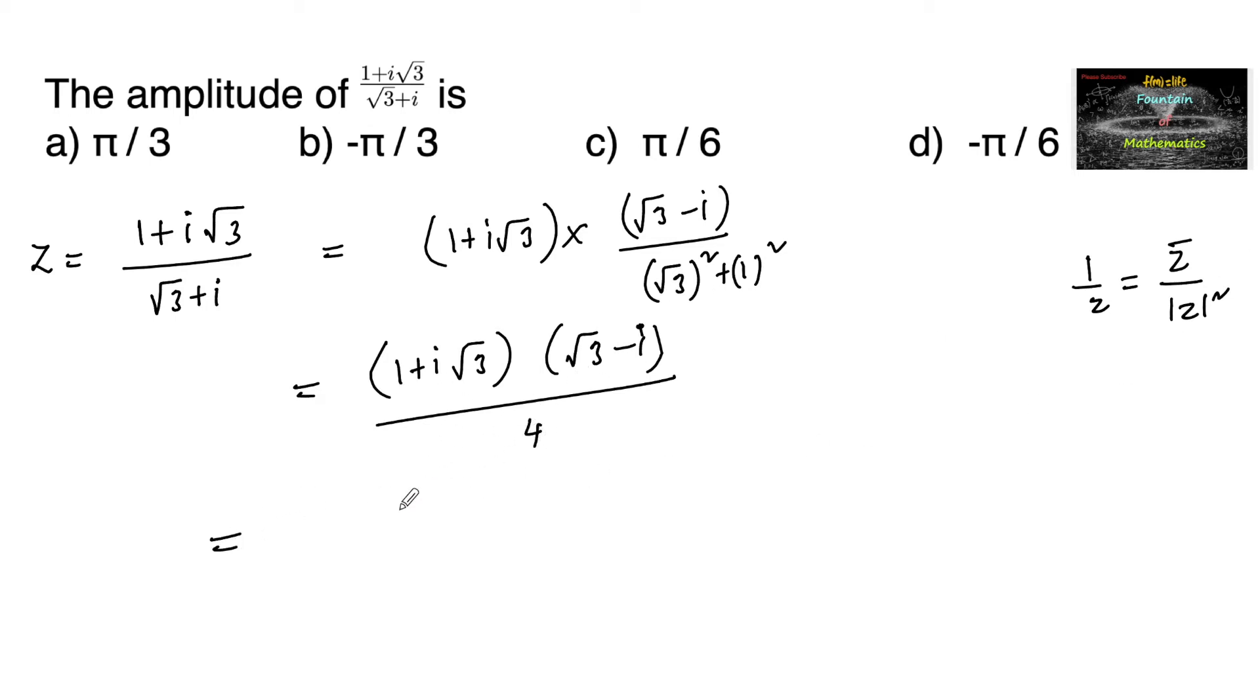Let us multiply both. We can write root 3 plus root 3, plus i times root 3 into root 3, that is 3 minus 1, upon 4.